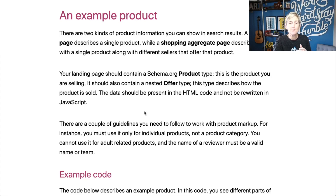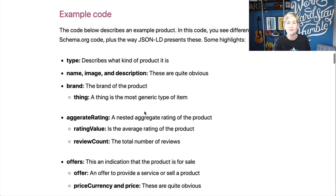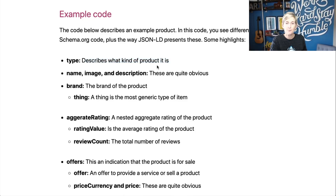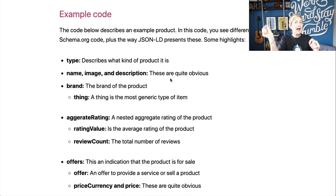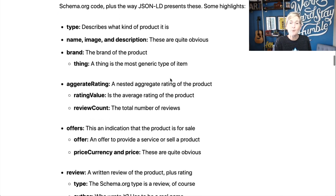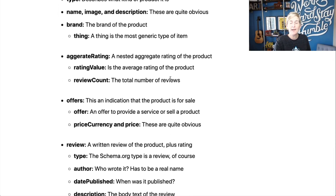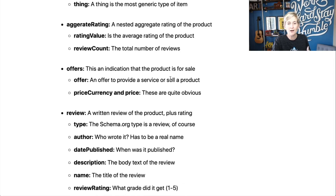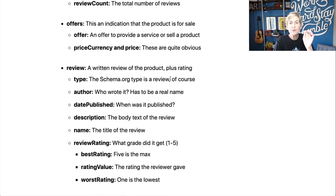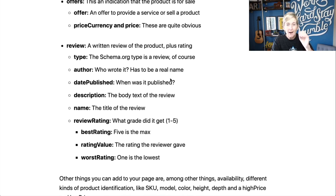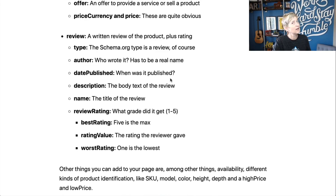If you want a product to really display inside those search results, here's some example code that you can wrap around your individual product. The type describes what kind of product it is — maybe it's a camera. The name, the image, the description are super important, letting Google know: pay attention to this area. The brand, the rating value, or the review count — super important. Any offers that might be going on, if it's on sale. A specific review that the author has given about this product. People love shopping by reviews, and Google loves showing reviews.